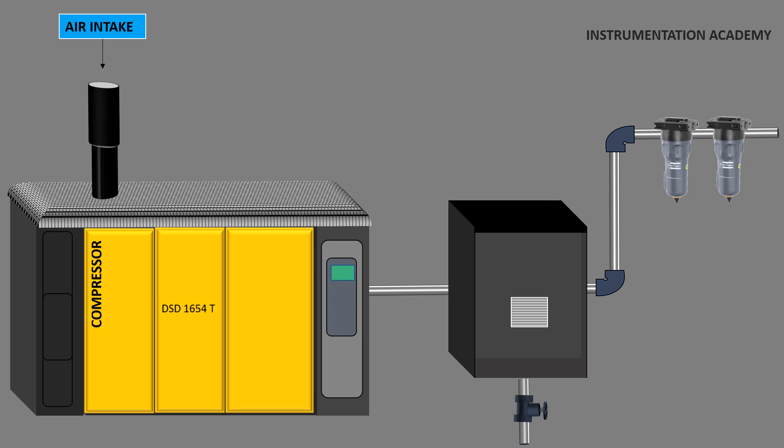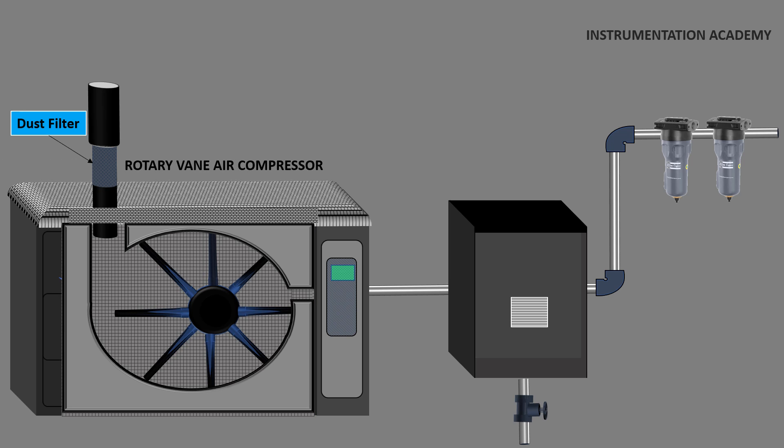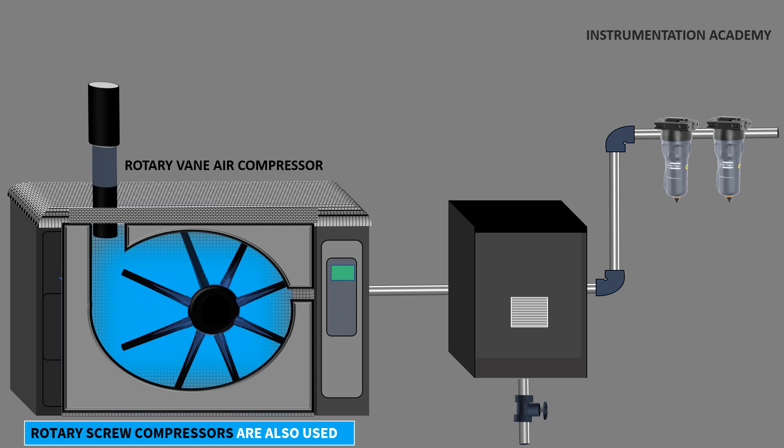This air enters the air compression block through a dust filter which filters the dust particles in the air. The air compressor has a spinning rotor which is away from the center. Arms with self-adjusting length create cavities of varying size. The incoming air fills the cavity and travels around.